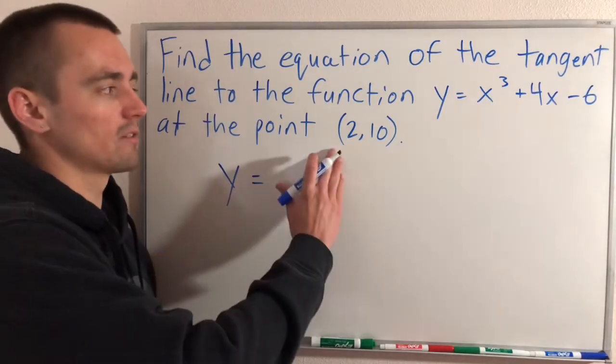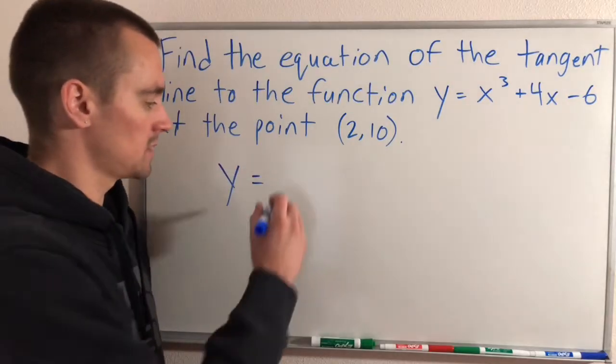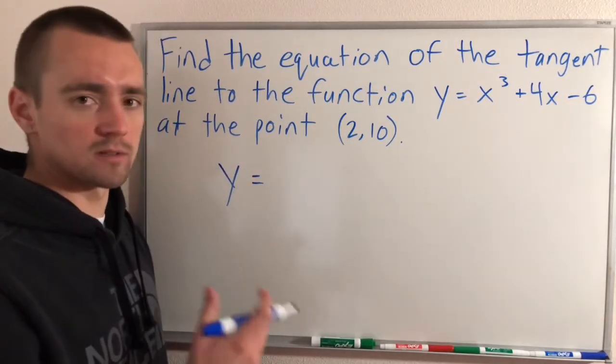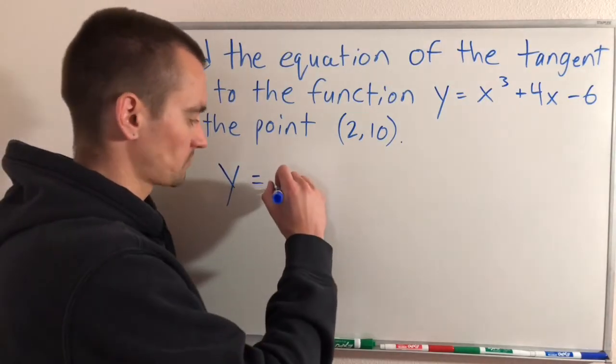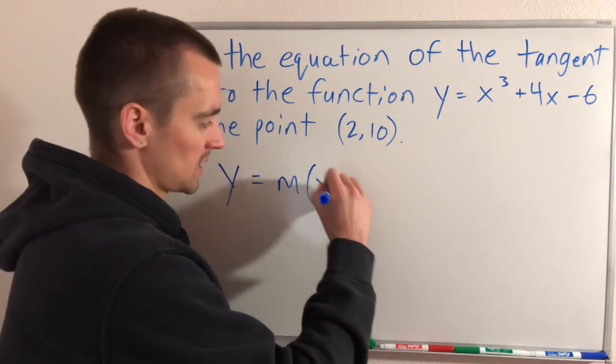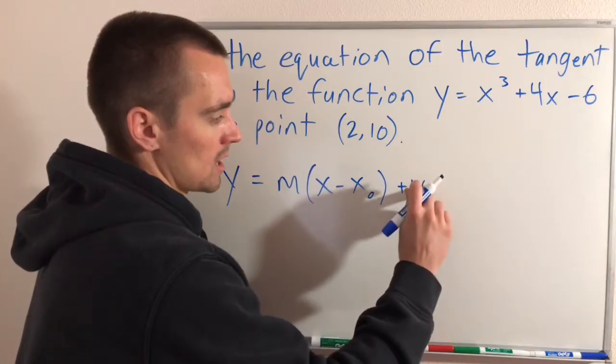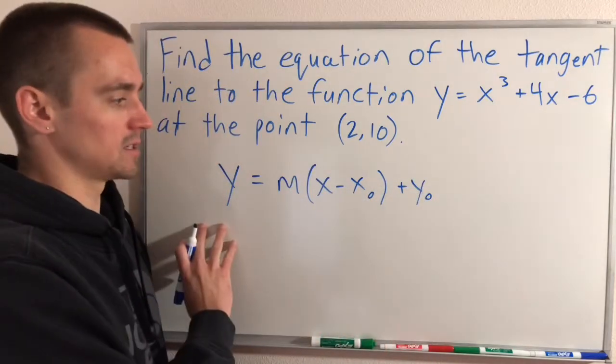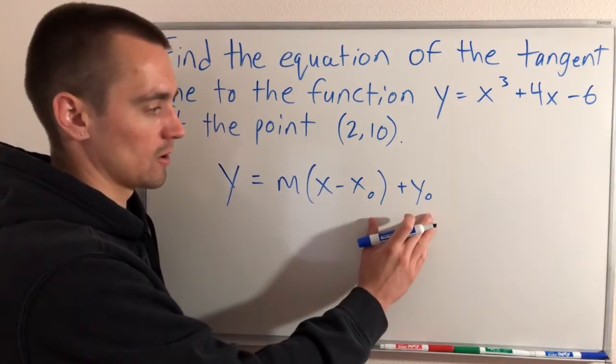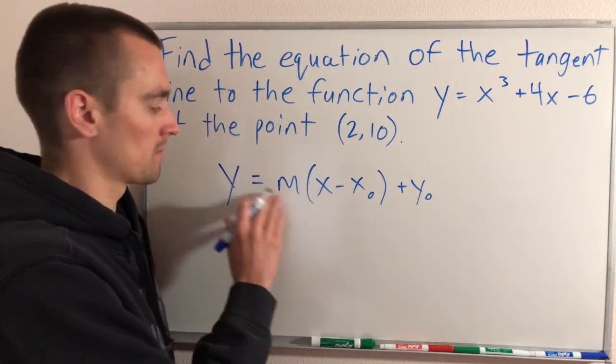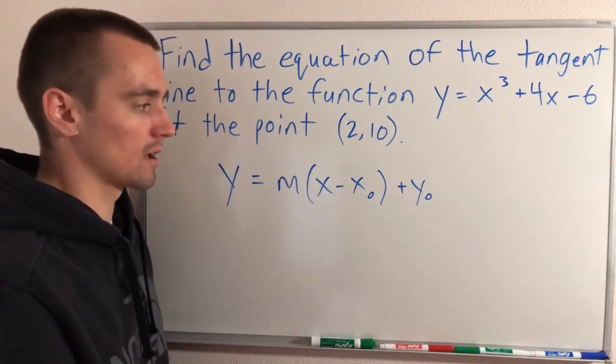In this case, since we're given a specific point that our function has to go through, it's easiest to use the point-slope form of a linear function, which is y = m(x - x₀) + y₀. This is an equation of a line that goes through the point (x₀, y₀) and has slope m, where x is our independent variable and y is our dependent variable.